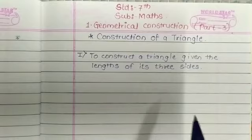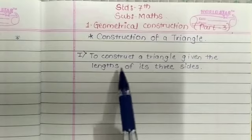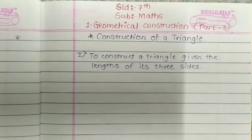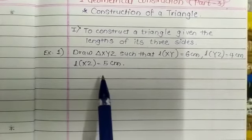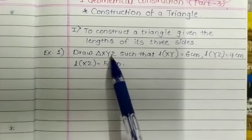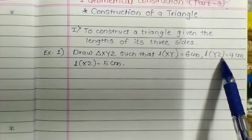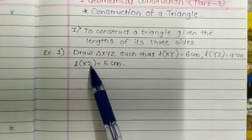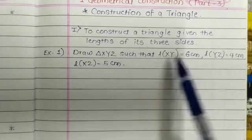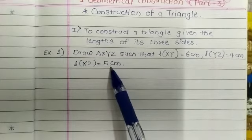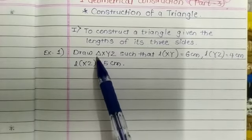We are going to make triangle XYZ with length XY equal to 6 cm, length YZ equal to 4 cm, and length XZ equal to 5 cm. You have three sides with lengths 6 cm, 4 cm and 5 cm, and you have to draw the triangle XYZ.